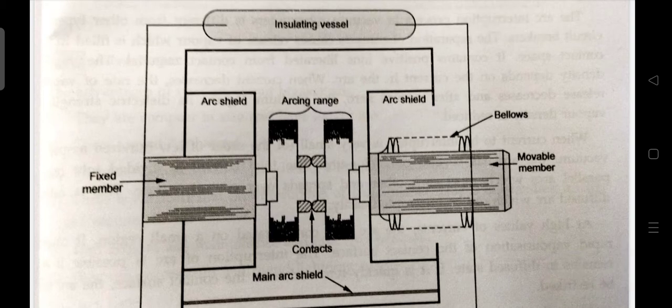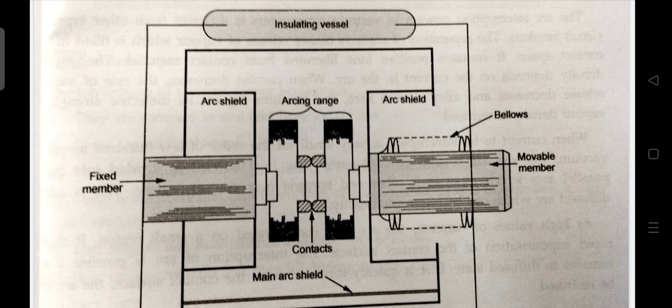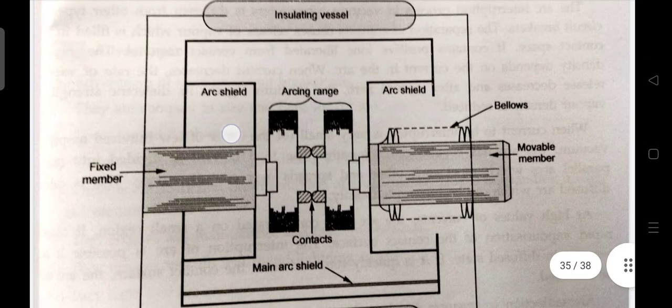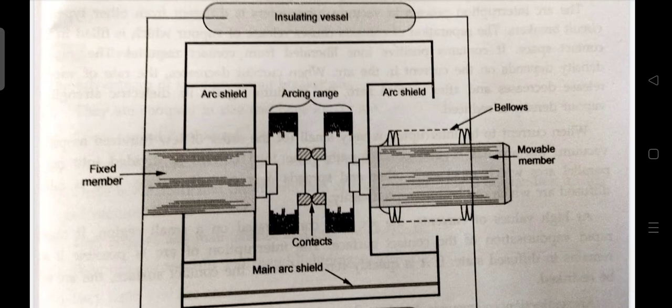The movable chamber is connected to the control mechanism by stainless steel bellows. The glass vessel or ceramic vessel is used as the outer insulating body. The arc shield prevents the deterioration of the internal dielectric strength by preventing metallic vapor falling on the inside surface of the outer insulating cover.